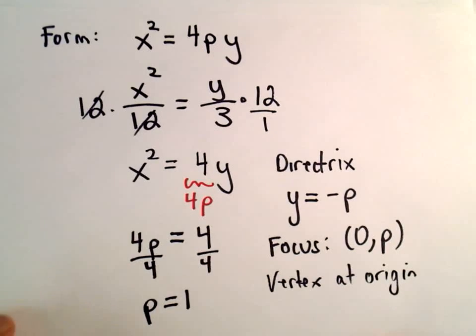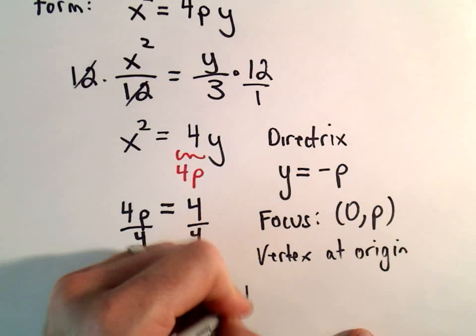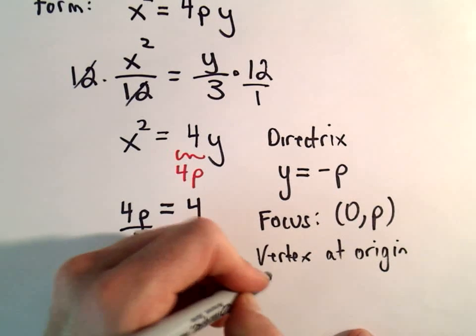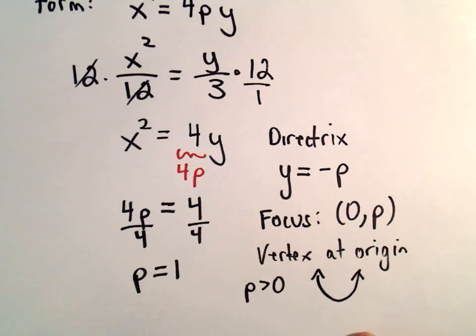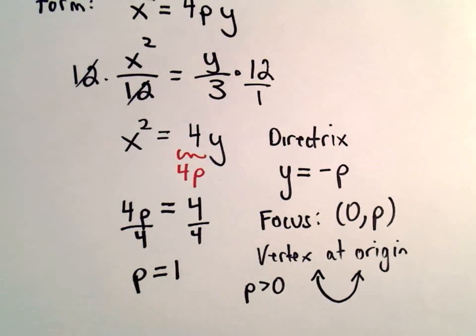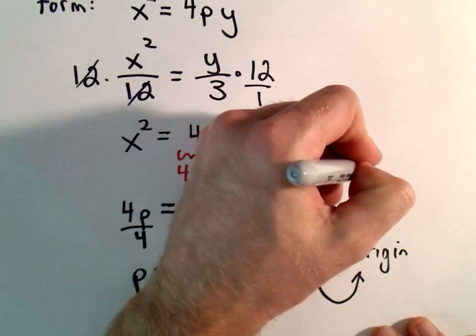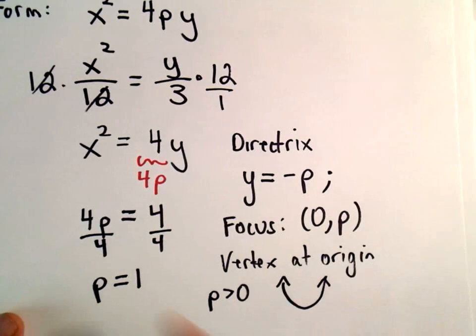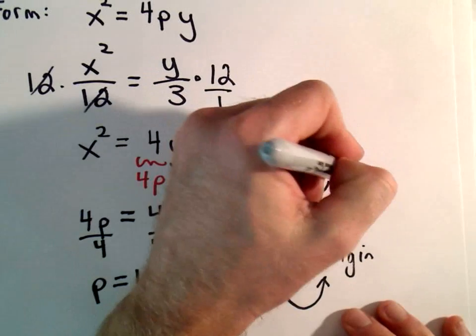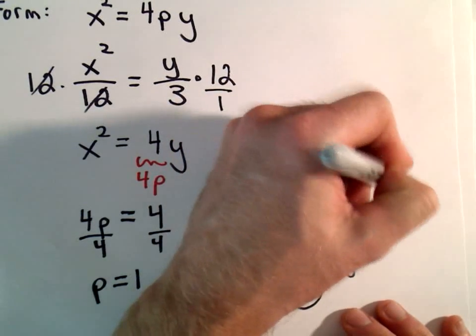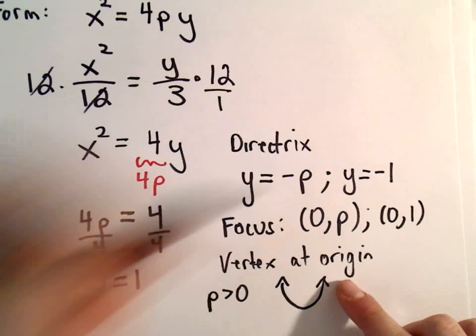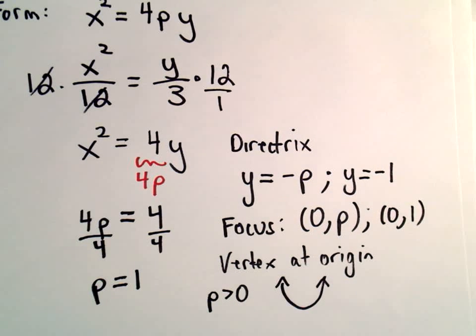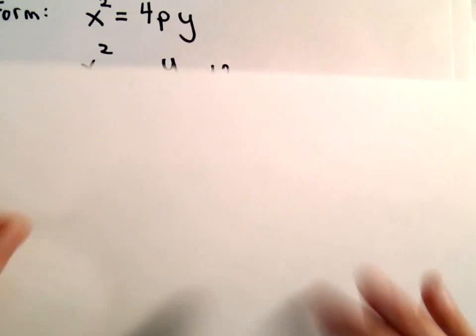One last thing worth pointing out. Since our p value is greater than 0, we know that our parabola is going to open upwards. Since p equals 1, we know our directrix is going to be y equals negative 1. The focus will be at 0, 1.